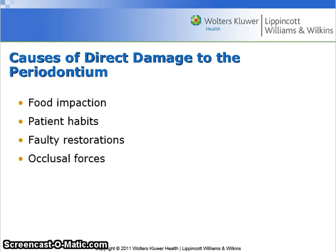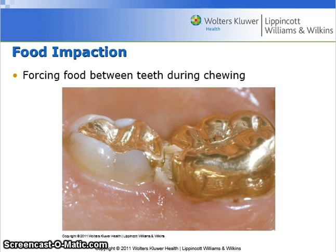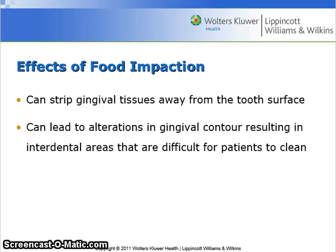The factors that cause direct damage to the periodontium include food impaction, patient habits, faulty restorations, and occlusal forces. As a patient chews food, the food is forced between the teeth and produces direct damage to the periodontium. Food impaction can strip gingival tissues away from the tooth surface and can lead to alterations in gingival contour, resulting in interdental areas that are difficult for the patient to clean.